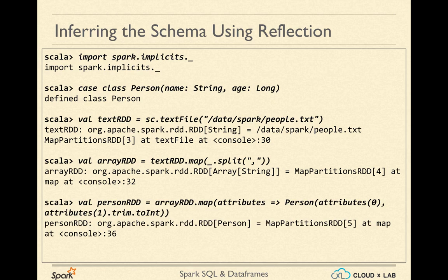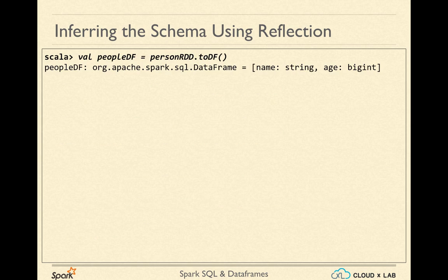Next, we convert each record having an array of two strings into an object of the Person case class. Again, we are using map transformation to transform each record into an instance of the Person class. Finally, this RDD having objects of the Person class as records can be easily converted into a DataFrame using a function called toDF on the RDD.